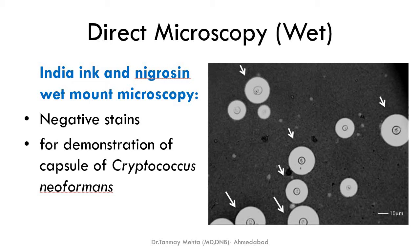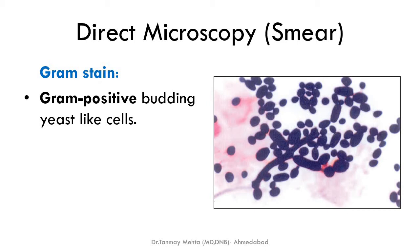The third wet preparation method is India ink or nigrosin — the same negative staining method used for capsule detection in bacteria. Here it is used for detection of the capsulated yeast Cryptococcus neoformans; the capsule of Cryptococcus neoformans is visible with this negative staining method. That completes the three wet preparation methods: KOH wet preparation, LPCB mount, and India ink.